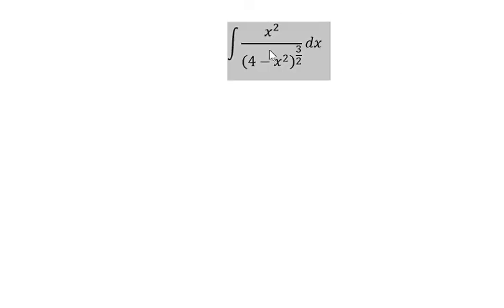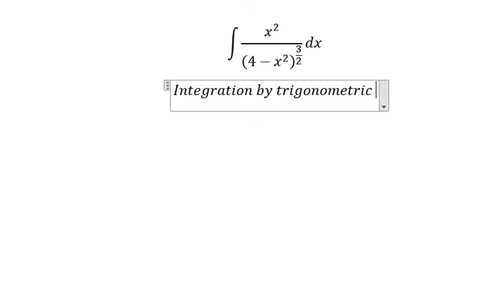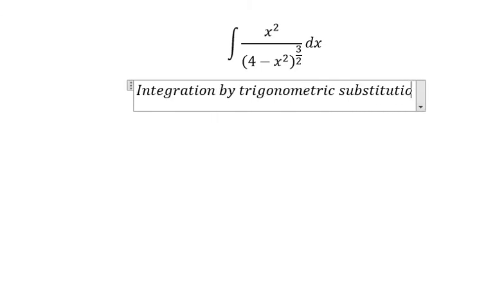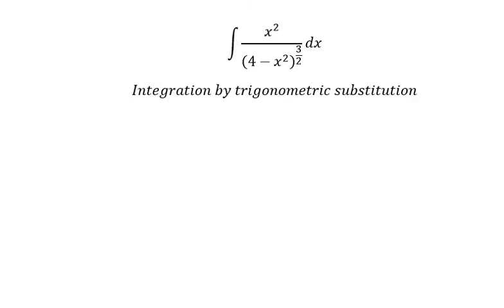We need to use integration by trigonometric substitution. So we set x equal to 2 sine t, and then dx equals 2 cosine t dt.